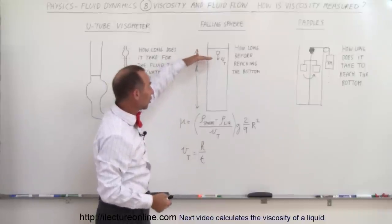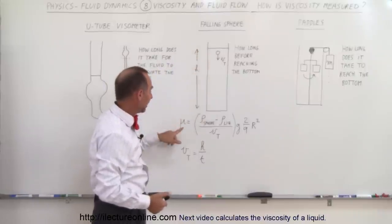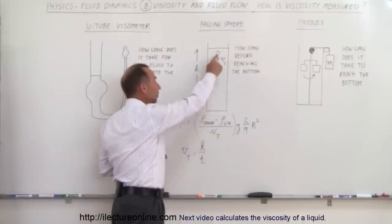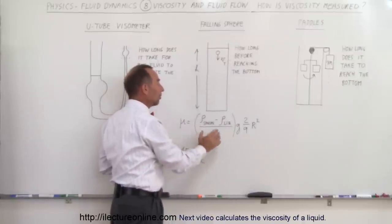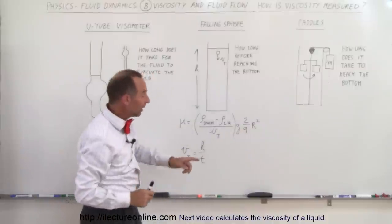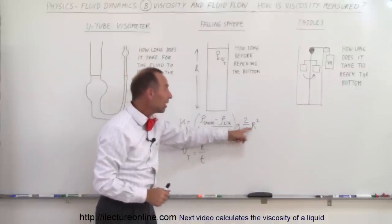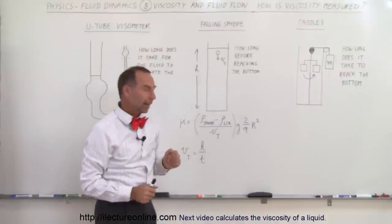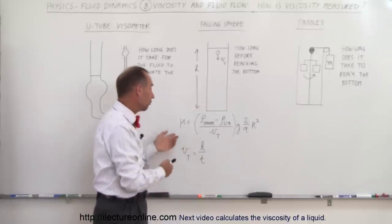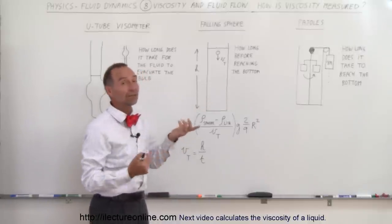You simply measure how long it takes at that velocity, and then the viscosity here is simply the difference between the density of the sphere and the density of the liquid, divided by the terminal velocity times acceleration due to gravity times two-ninths the radius of the sphere squared. That's one way in which we can do the laboratory experiment and also figure out what the viscosity is of the liquid if that's an unknown.